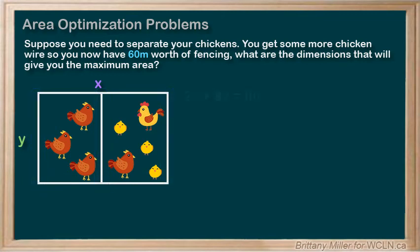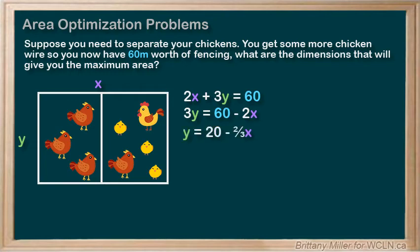So 2x plus 3y equals 60. To rearrange this, we get 3y equals 60 minus 2x, and then divide everything by 3 to give y equals 20 minus two-thirds x. Then our area, which is what we want to maximize, is going to be x times y, or x times (20 minus two-thirds x).